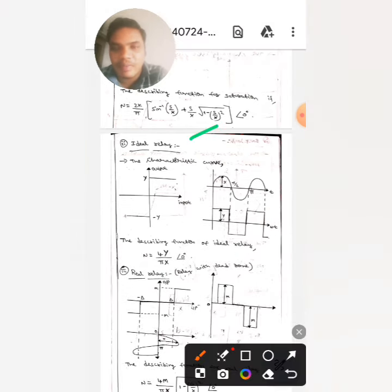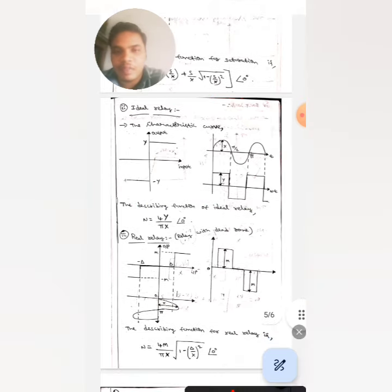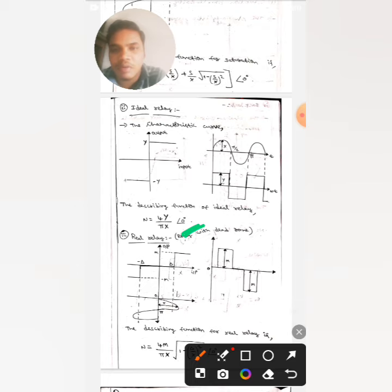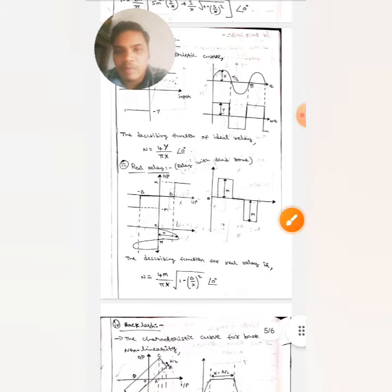The next one is ideal relay. Here the characteristic curve of the ideal relay in describing function analysis is this one, whereas the describing function is n equals to 4y by pi x with phase angle zero degrees.